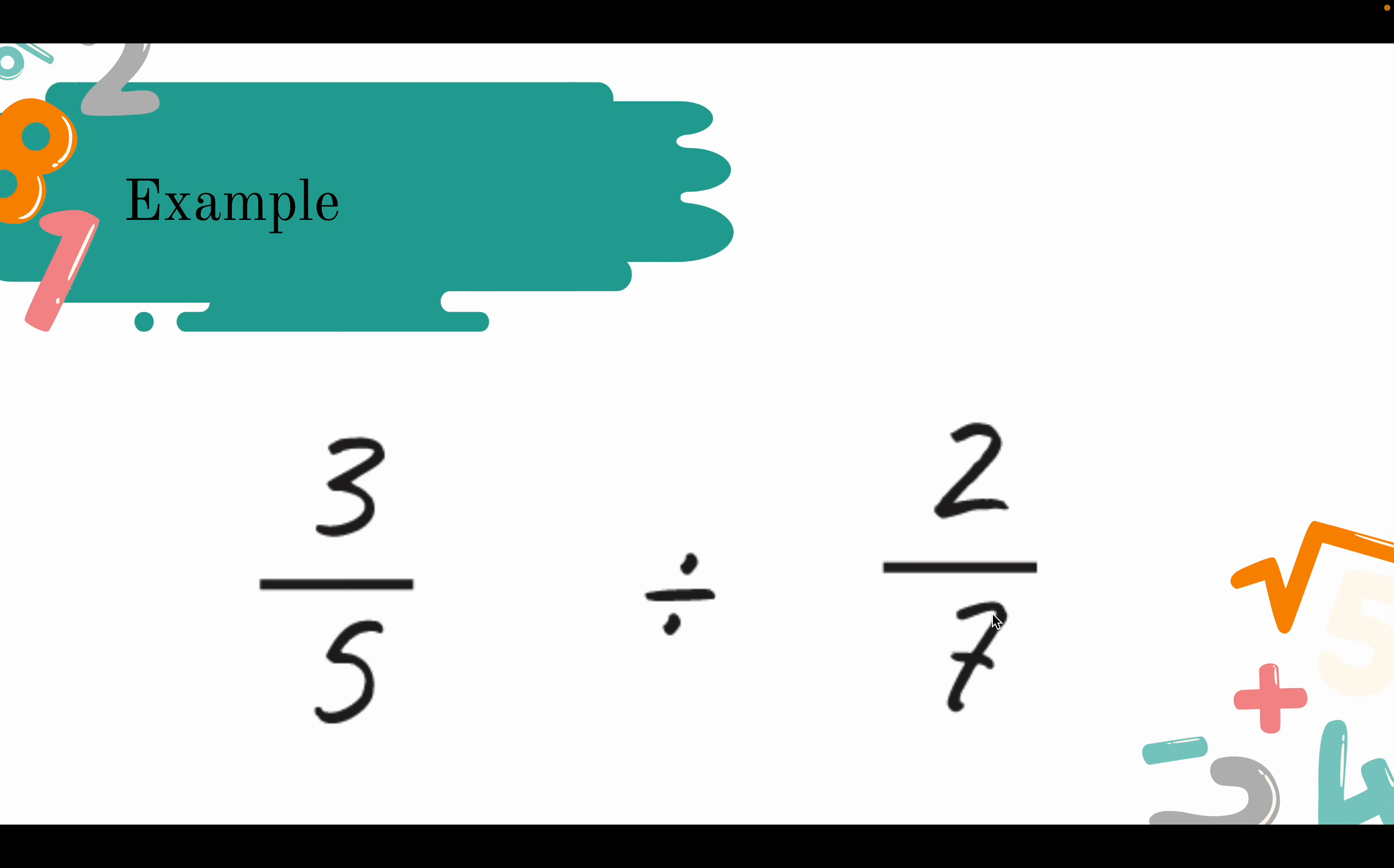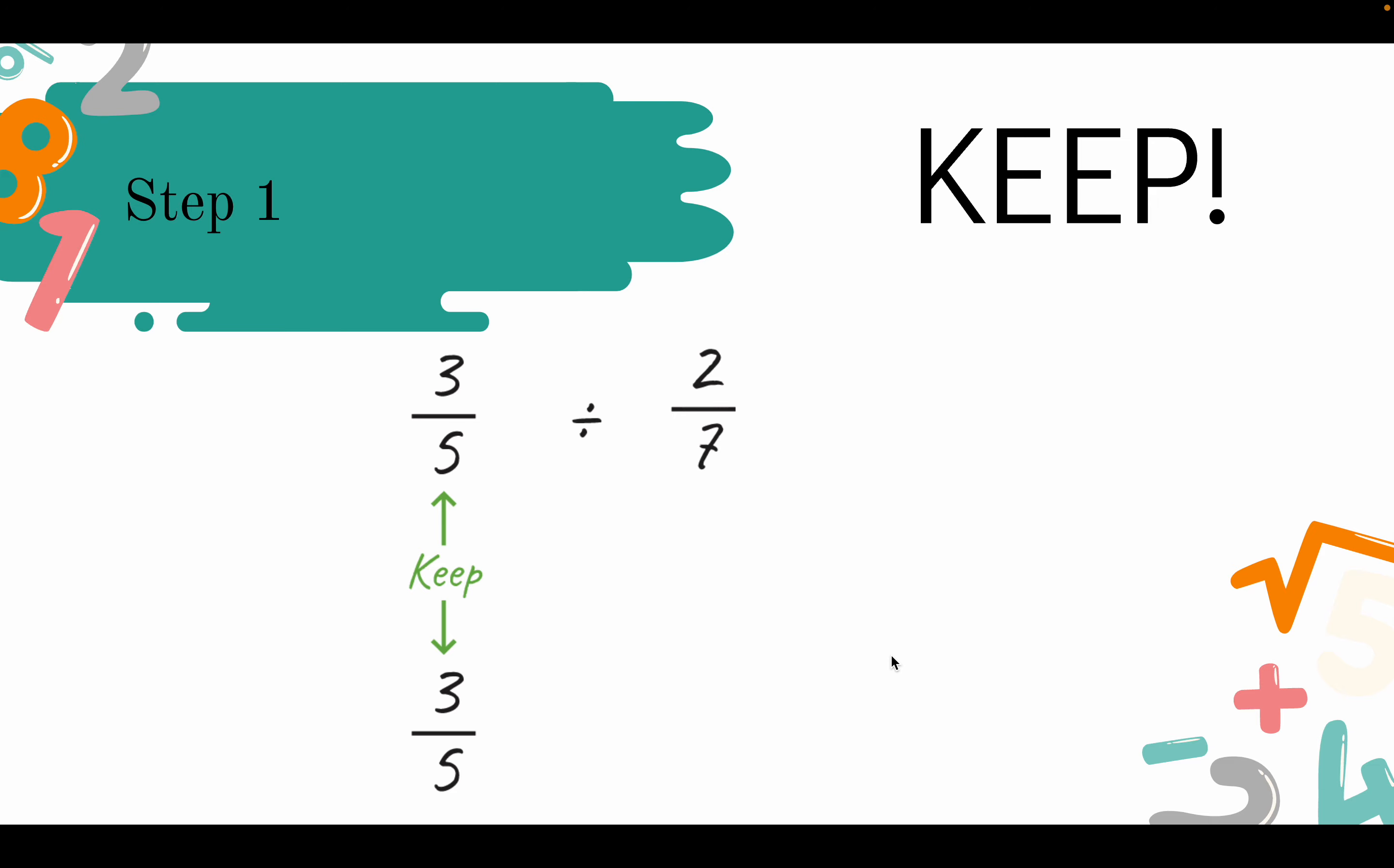Let's take an example to understand the steps. We have 3 fifths divided by 2 sevenths. The first step is to keep. So we keep the first fraction in the equation. We have 3 over 5, we just keep it as it is, so just bring it down to 3 fifths.